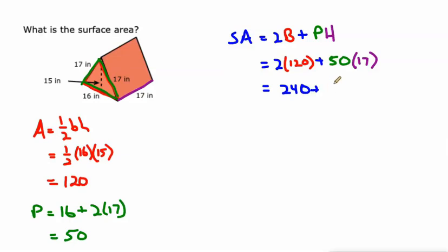240 plus 850. The 240 is the area of the two triangles, the front and the back. And the 850 is the area of the other three sides. So 850 plus 240 is 1090 square inches.